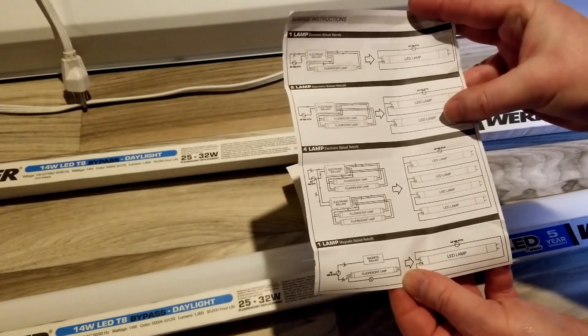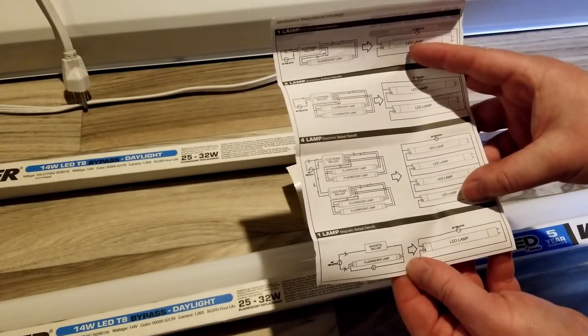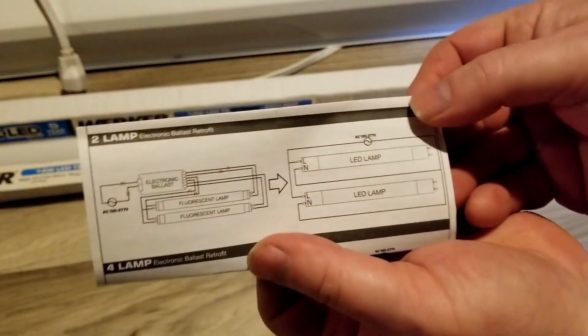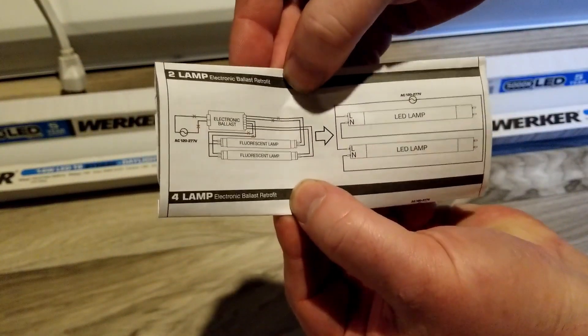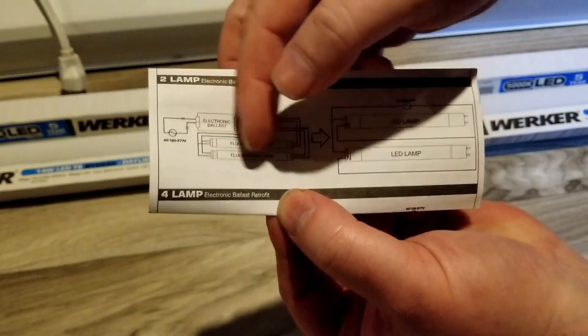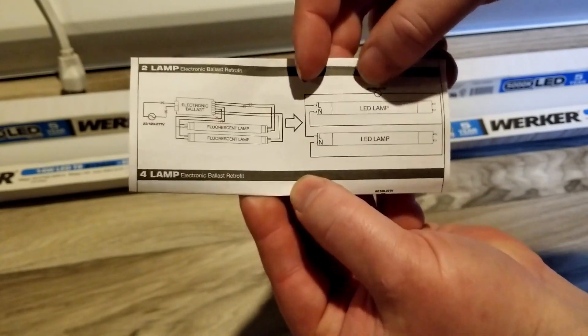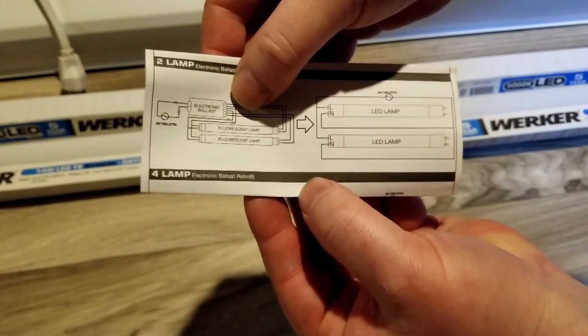It comes with instructions - be sure to read those real good - along with a diagram on how to wire up one LED, two LEDs, four LEDs, and so on. We are going to do this one for the ballast retrofit.